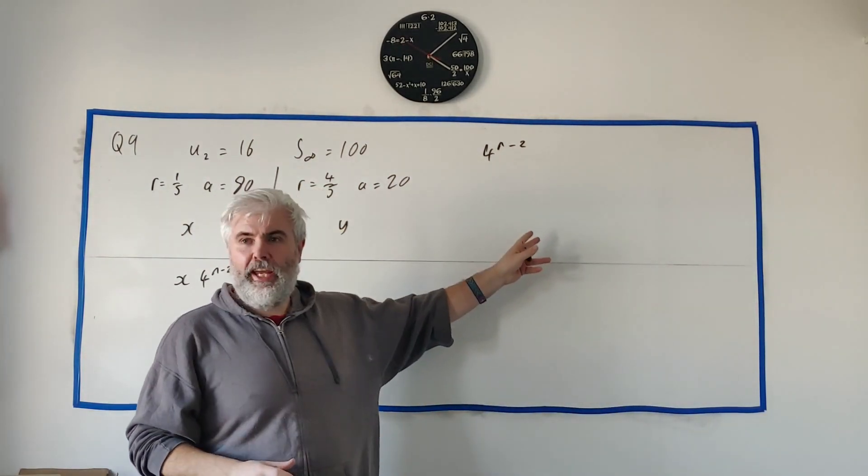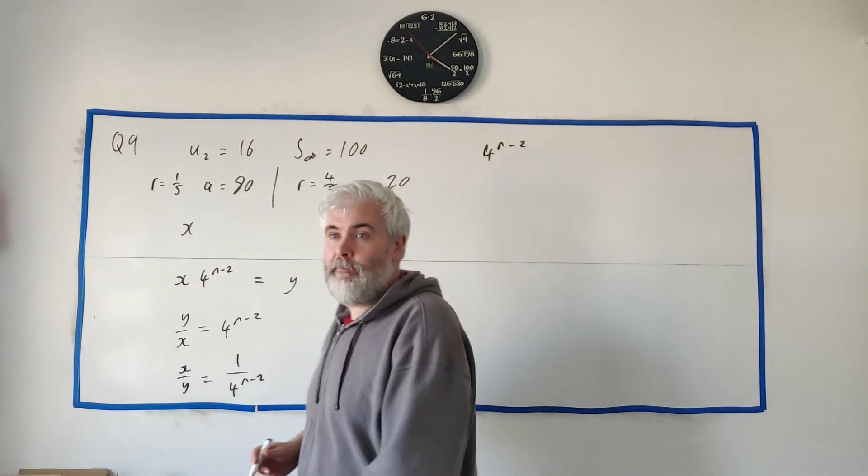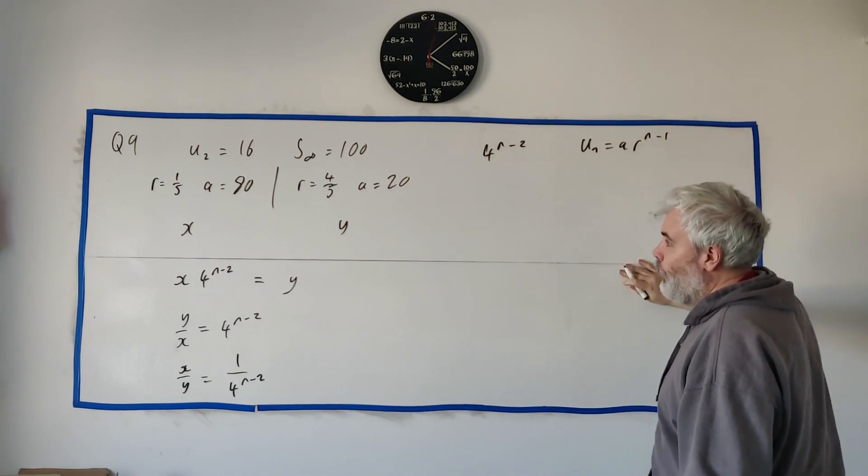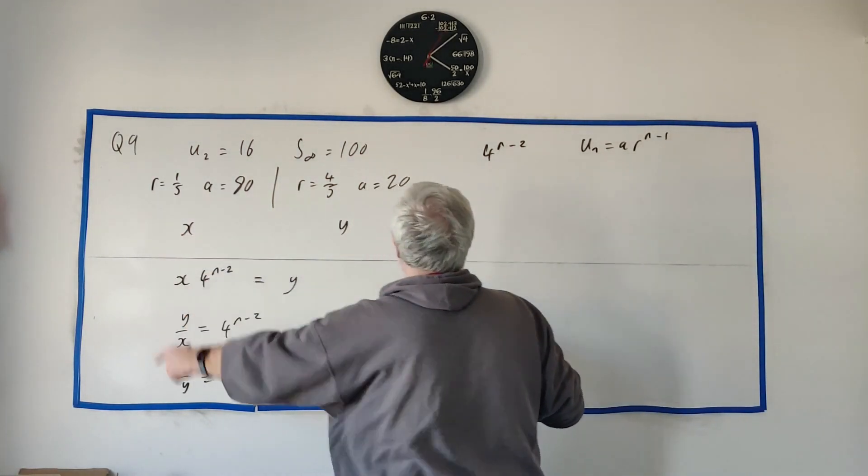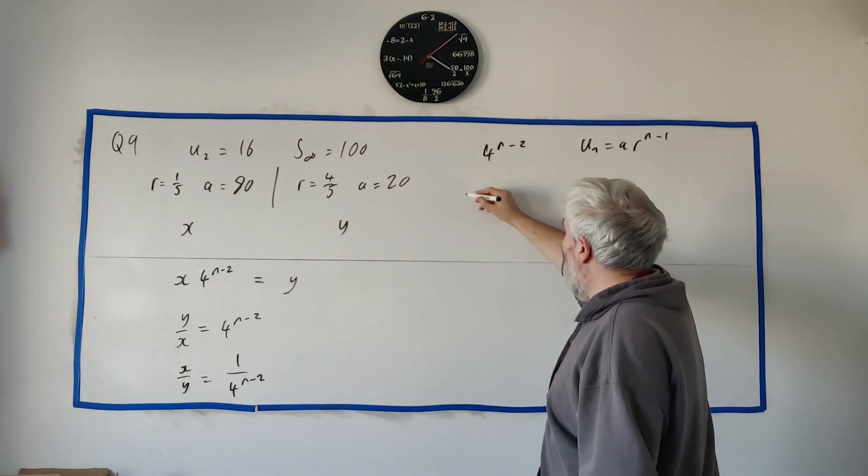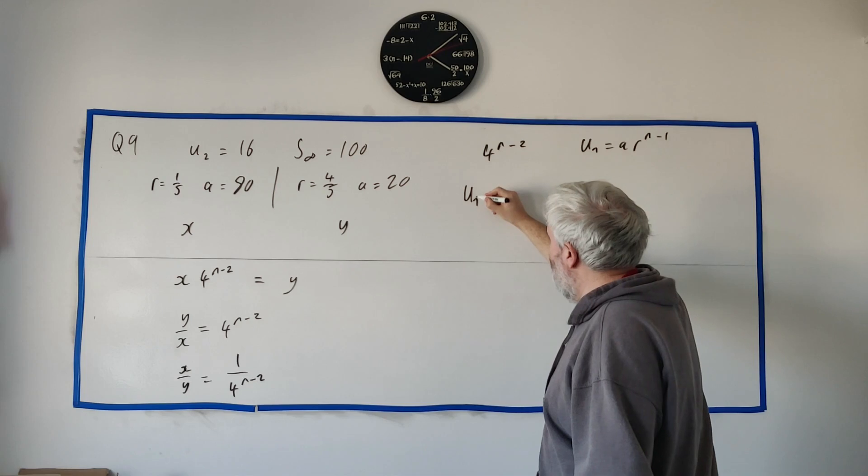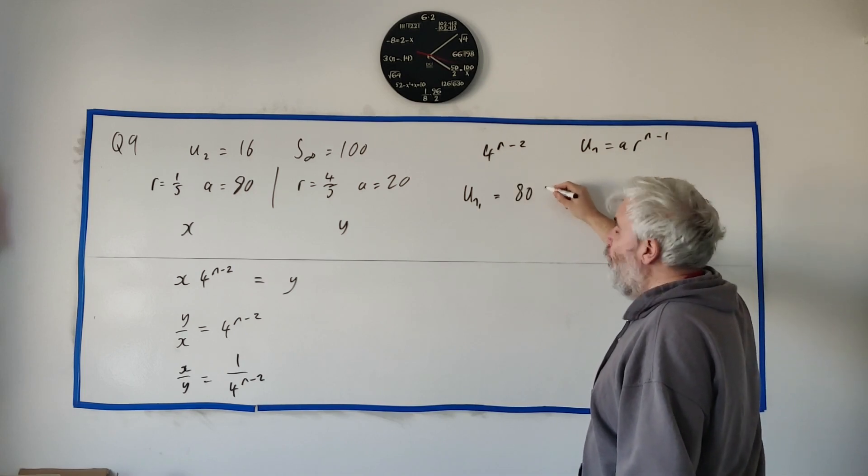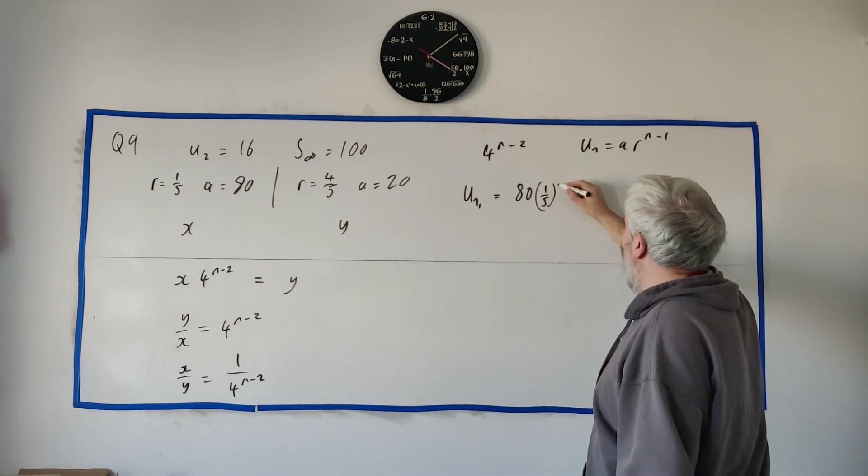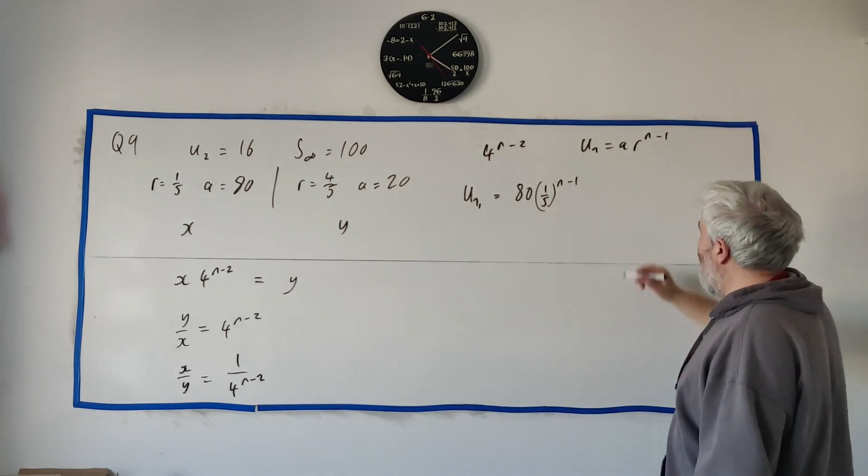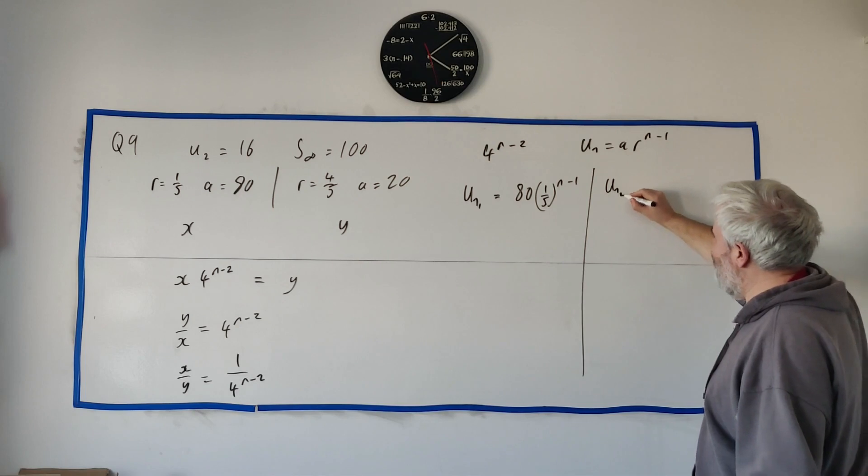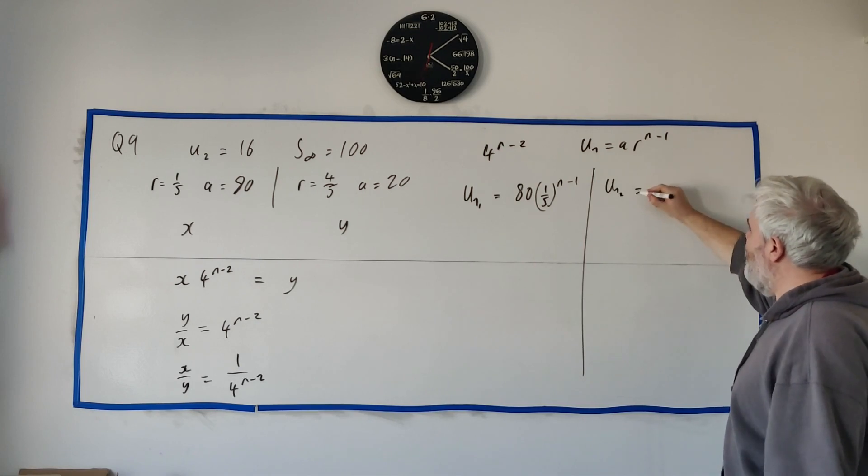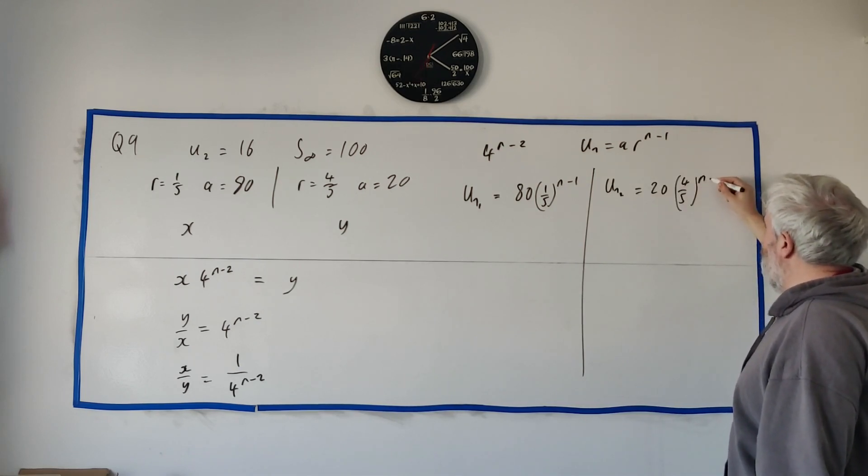So let's go ahead and find the nth term of both of them. We had the formula up. Let's put it up again. Un is equal to a times r^(n-1). Let's write it up here. Un is equal to a times r^(n-1). Let's do this for both of them here. Let's go. The very first guy will have Un1 is equal to a is 80, r is 1/5 to the power of n-1. And then let's do that again. Un and the second time is equal to 20(4/5)^(n-1).